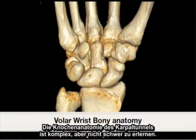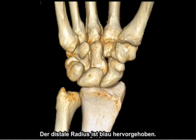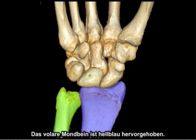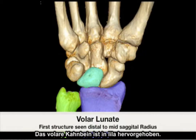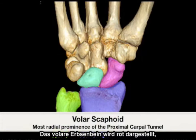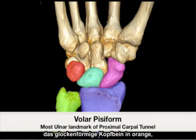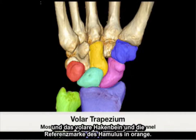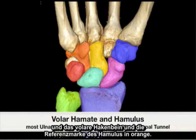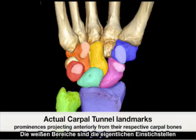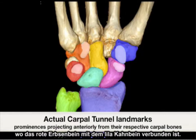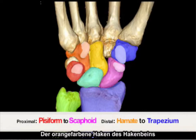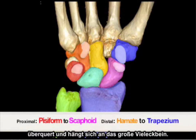The bony anatomy associated with the carpal tunnel is complex, but not difficult to learn. Highlighted in blue is the distal radius, in green the distal ulna, in light blue the volar lunate, in purple the volar scaphoid, in red the volar pisiform, in orange the bell-shaped capitate bone, in blue the volar trapezium bone, and in orange the volar hamate and hamulus landmarks. The white areas are the actual insertion points of the carpal tunnel landmarks — from the red pisiform attaching to the purple scaphoid, and the orange hook of the hamate crossing over and attaching to the trapezium tubercle.